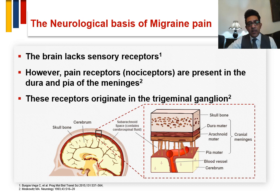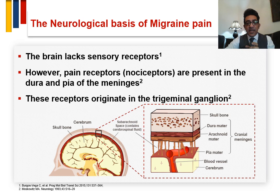The brain lacks sensory receptors — there are no sensory receptors in the brain itself. However, nociceptors are present in the dura mater and pia mater of the meninges, and these receptors originate from the trigeminal ganglion.